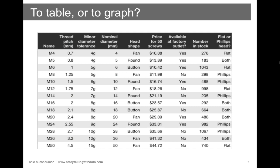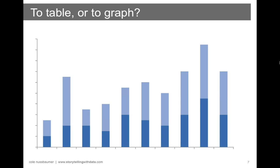Tables we read — they interact with our verbal system. When I have a table in front of me I typically have my two index fingers out, reading across rows and down columns. Tables are great when you have a diverse audience where everyone wants to look at their specific piece of data, or when you have a lot of different units of measure. Graphs on the other hand interact with our visual system — it's a high-bandwidth information flow through our eyes into our brain, amazingly powerful at showing large quantities of data in an easy-to-consume fashion when designed well.